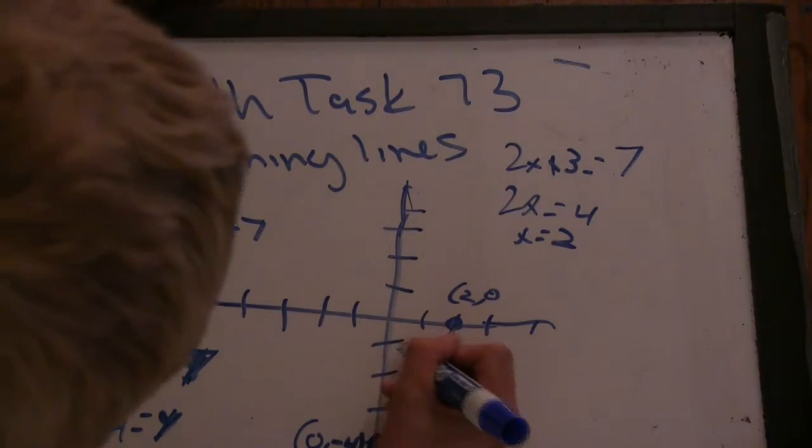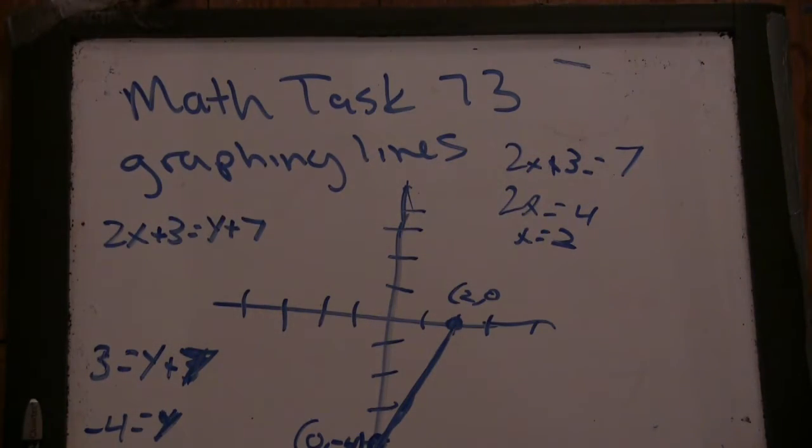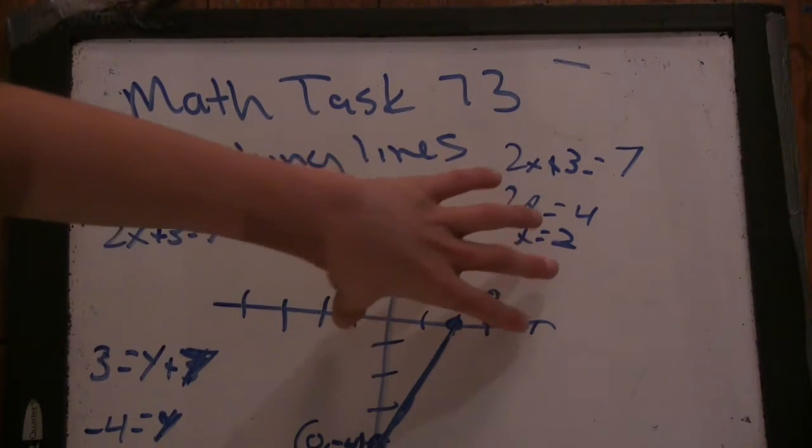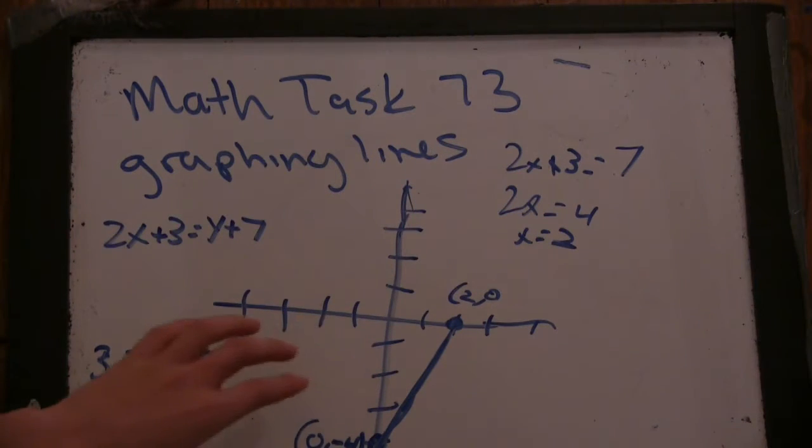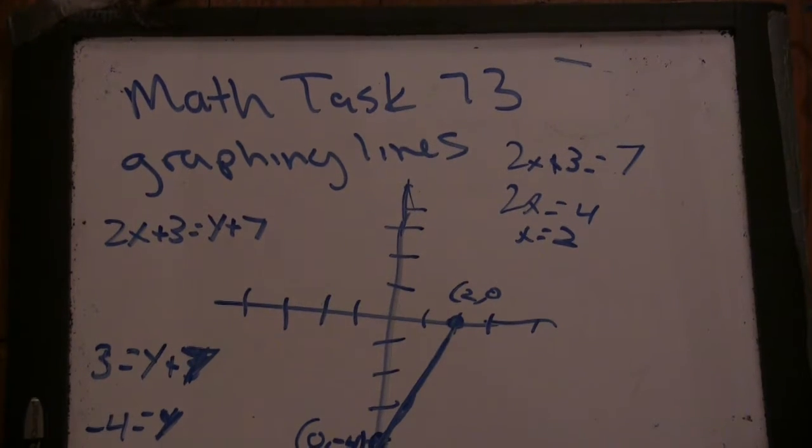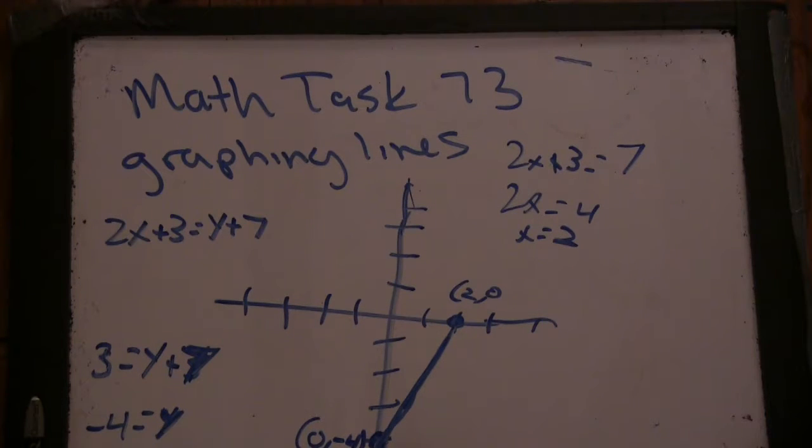So we've also found the x and y intercepts of the line just by using this technique. Okay. So the x and y intercepts are where the line intercepts the x axis and where the line intercepts the y axis. Okay. Where the line intersects the y axis, what is that called? The y intercept. Okay. And where it intersects the x axis? The x intercept. Okay.